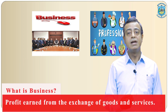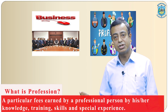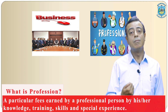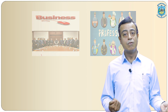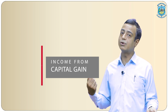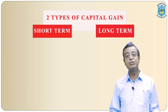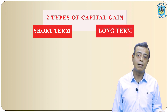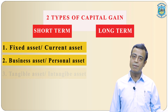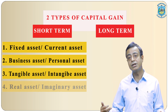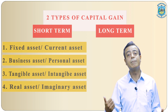Third is income from business and profession. What is business? Profit earned from the exchange of goods and services is business. What is profession? A particular fee earned by a professional person by his knowledge, experience, training or special expertise. Fourth is income from capital gain. We have two types of capital gain: short term and long term capital gain. Capital gain arises through the sale of any asset — for example, fixed asset or current asset, business asset or personal asset. It can be tangible or intangible asset, real asset or imaginary asset — sale of any asset results in capital gains.